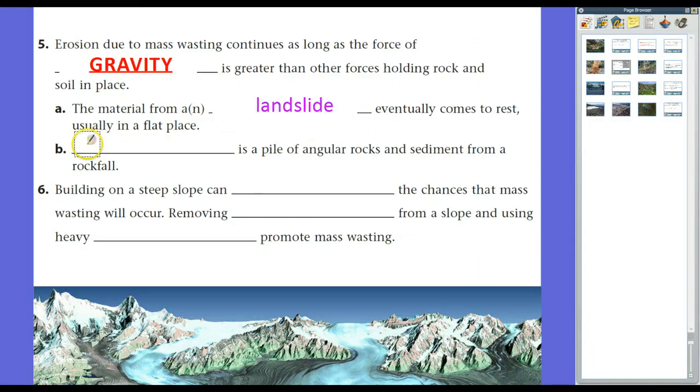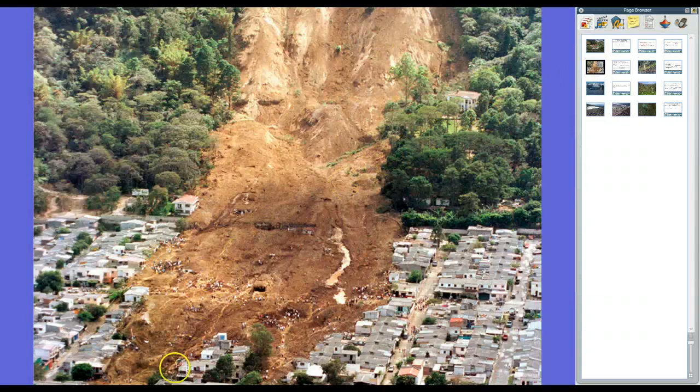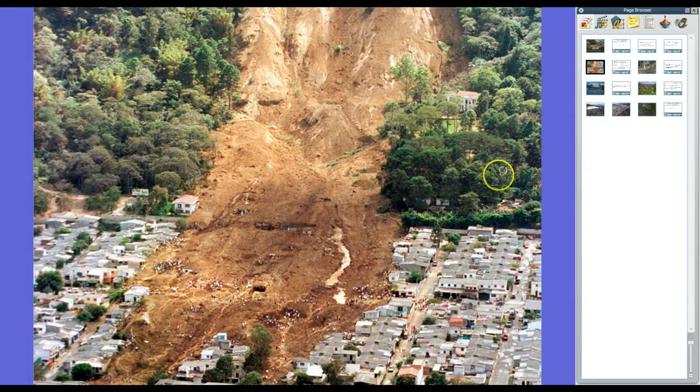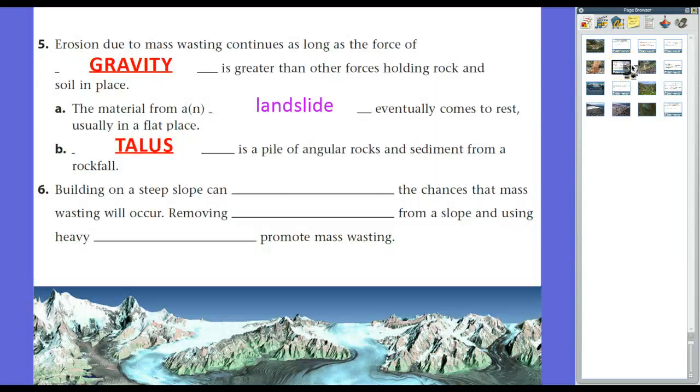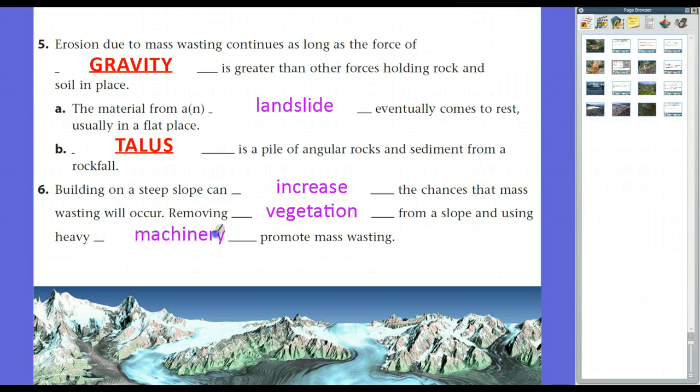This stuff that's come to rest is what we call talus. Talus is a pile of angular rocks and sediment from a rockfall. So this brown stuff right here, all this dirt and stuff that came from the side of the mountain would be considered talus. In that video you saw up in British Columbia, all the trees and stuff, the dirt that was mixed with it is talus. Building on a steep slope can often increase the chance that mass wasting will occur. In addition, removing vegetation, even using heavy machinery because of the vibrations will promote mass wasting.